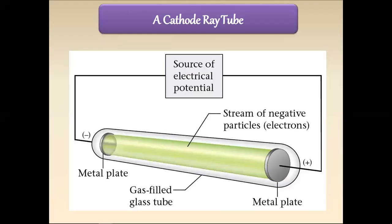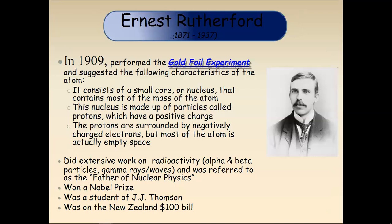The cathode ray tube has two sides — positive and negative — connected to a source of electrical potential. A stream of negative particles, that is electrons, flows between the positive and negative terminals. The tube is gas-filled, and between the two sides we have a metal plate — one positively charged and another negatively charged.